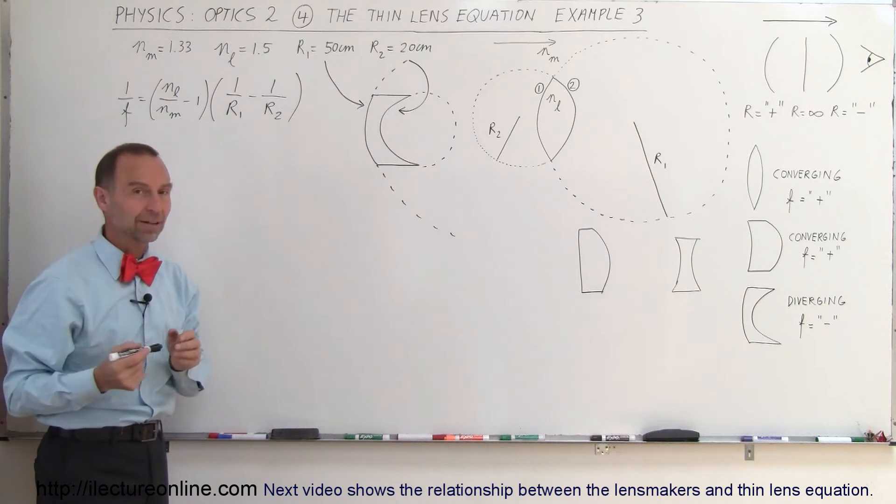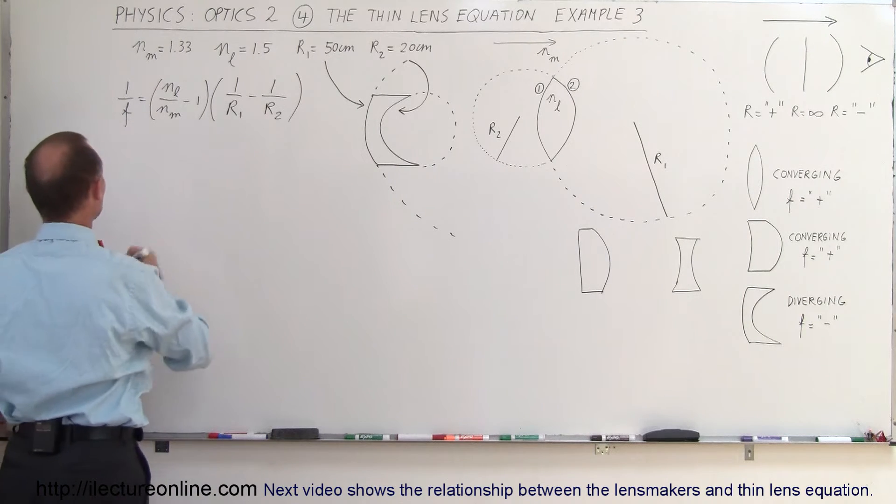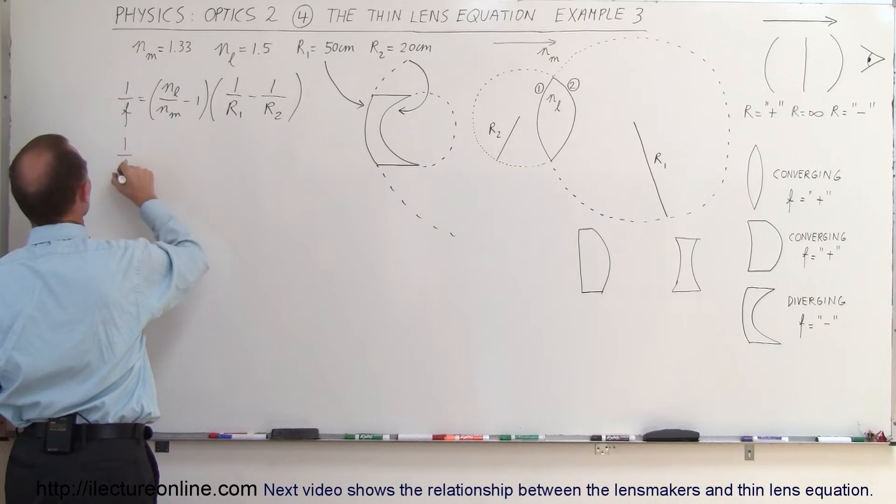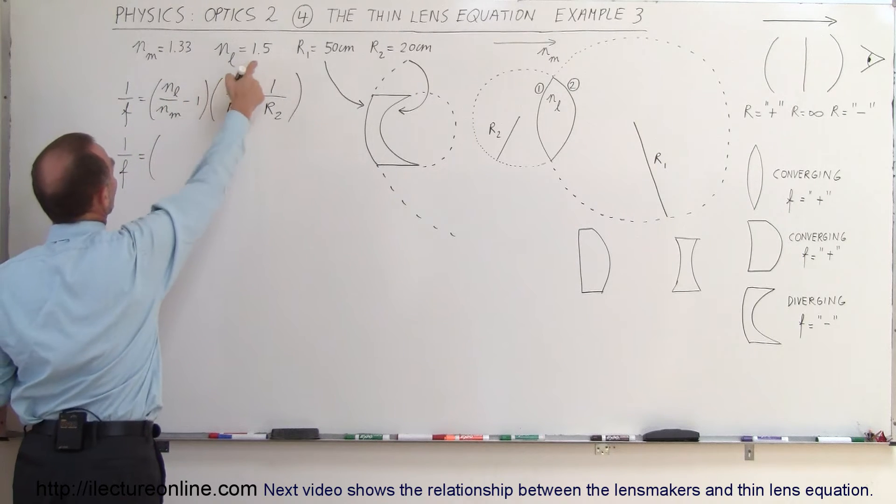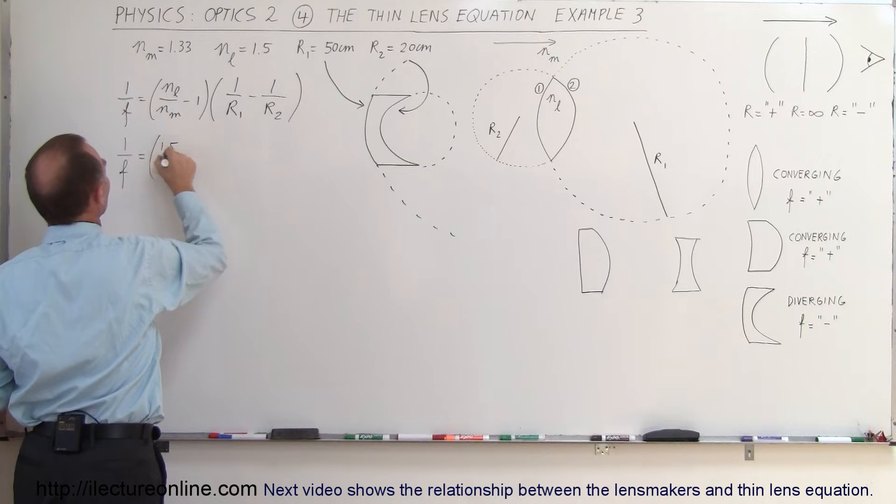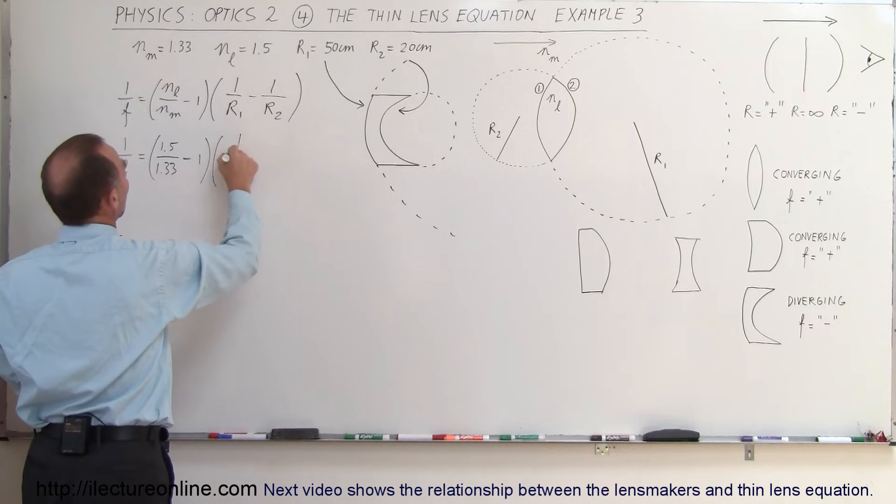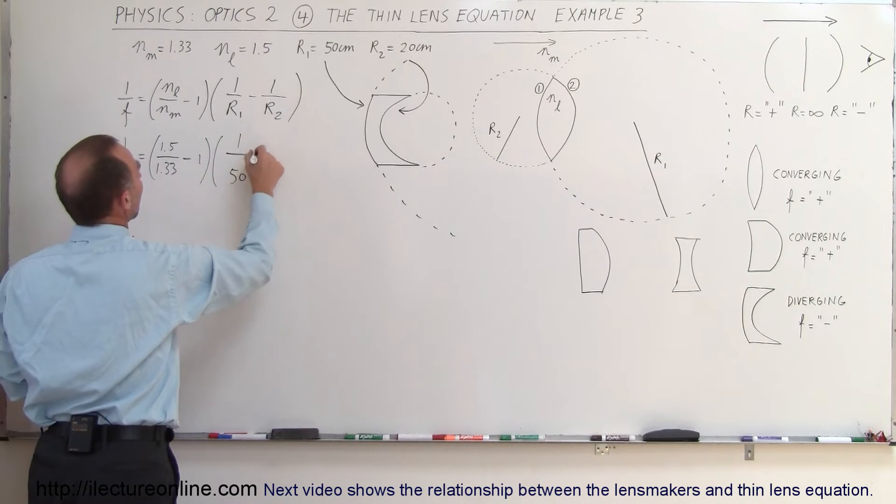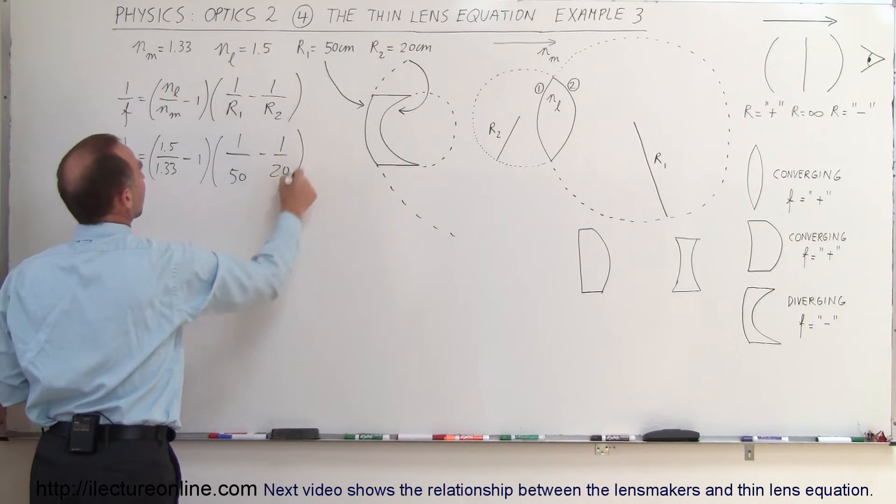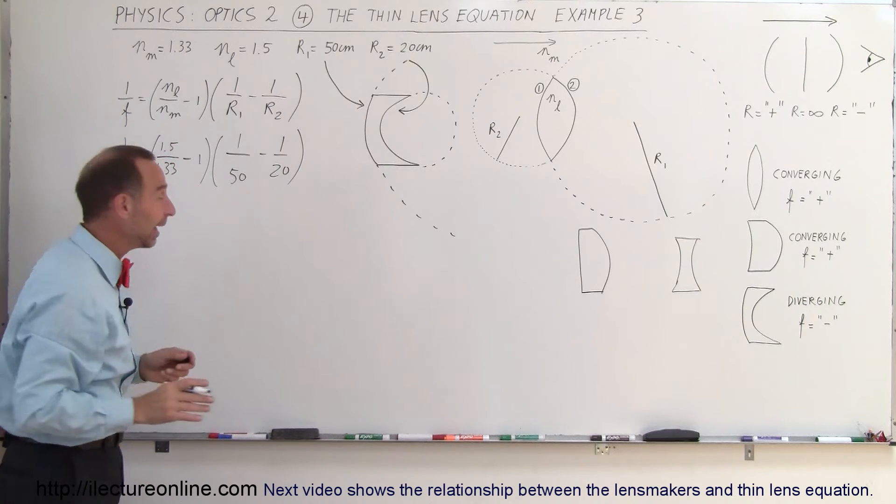Let's see if the numbers bear that out. So we have 1 over the focal length of the lens is equal to n-lens which is the index of refraction of the lens, 1.5 divided by index of refraction that looks like it's water, minus 1 times 1 over R1 which is 50, minus 1 over 20. Let's go ahead and simplify that and see what we get.